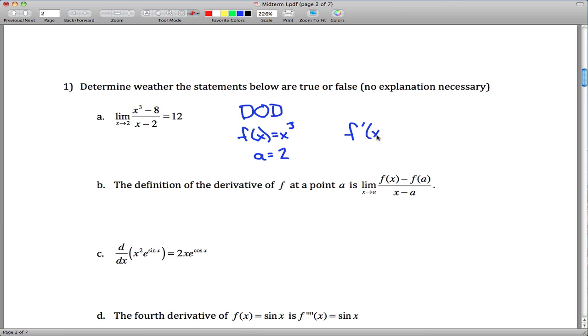So the definition of the derivative at this point: we got f'(x) equals 3x squared, and 3x squared if you plug in 2 for x, you get 3 times 4 is 12. So this is correct, this is true.